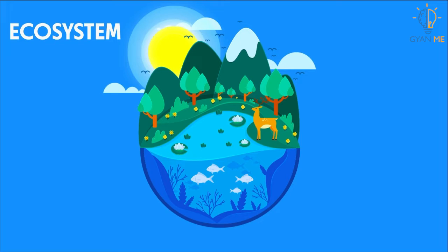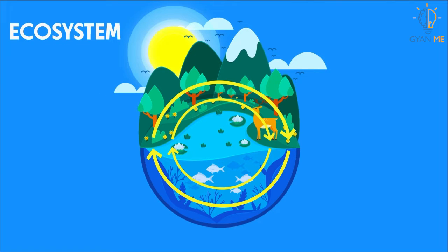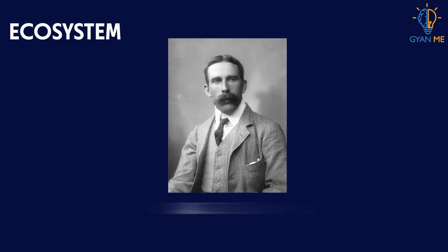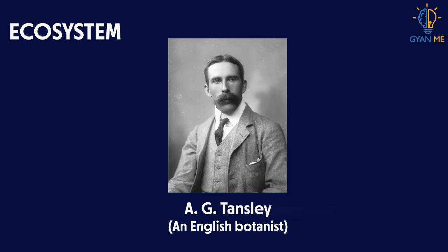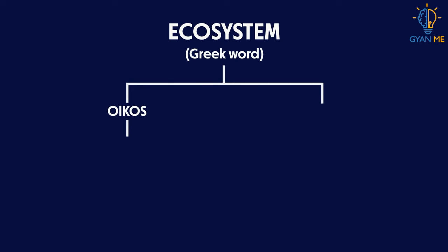To define, an ecosystem is a chain of interaction between organisms and their environment. The term ecosystem was first coined by A.G. Tansley, an English botanist in 1935. The word ecosystem is derived from the Greek word oikos, meaning home, and systema, meaning system.